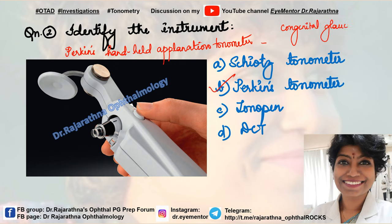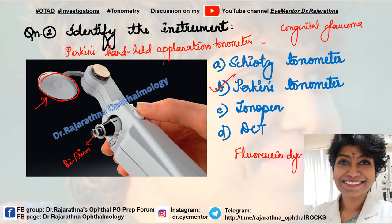In babies we prefer this. There is a biprism here giving rise to the mires, just like Goldman applanation, and here again we do use fluorescein dye. Please note this circle here — this is a forehead rest, so you place this on the forehead of the patient for good stability, because this is a handheld and hand-operated one.